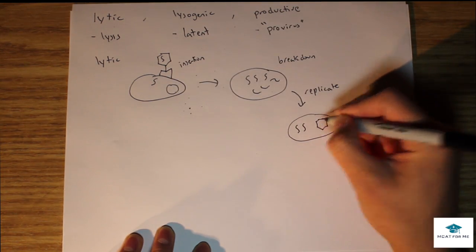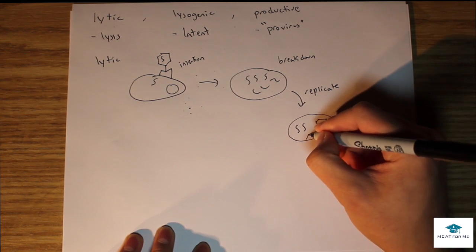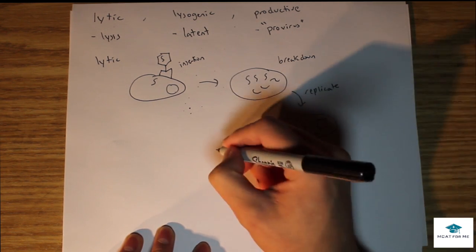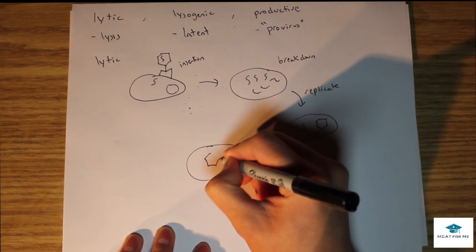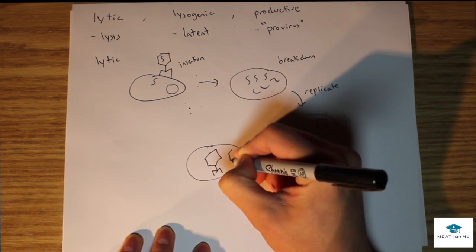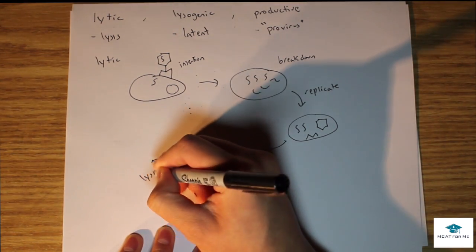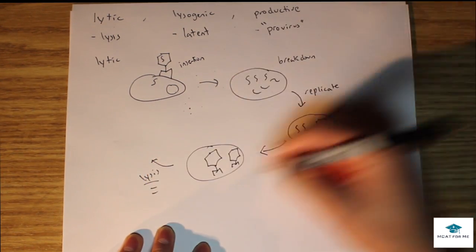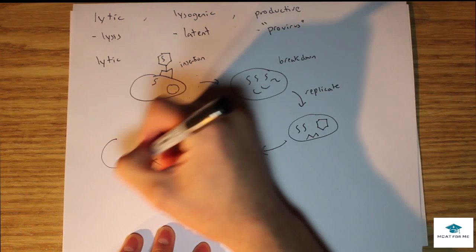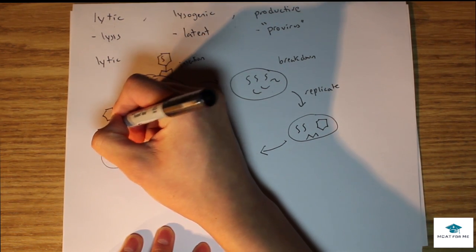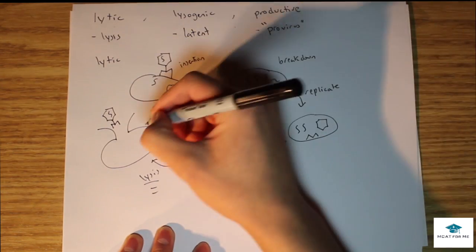We're gonna assemble all the things so that now we have the same viral genomes replicated. We'll have parts of the head replicated, parts of the tail replicated. Now we'll actually assemble everything together, so little viruses all packaged within the cell. This is where the lysis actually comes in and that's the most important part. This cell burst open.